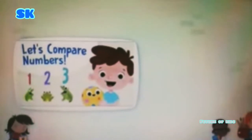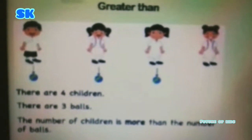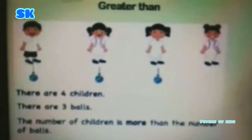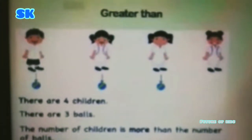Let's compare numbers. We will discuss greater than, less than, and equal to gradually. First of all, we are going to discuss greater than. There are four children and three balls, which means the number of children is more than the number of balls. We compared children with balls and the result is that the number of children is more than the number of balls.